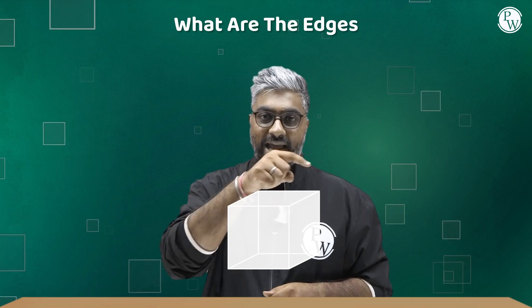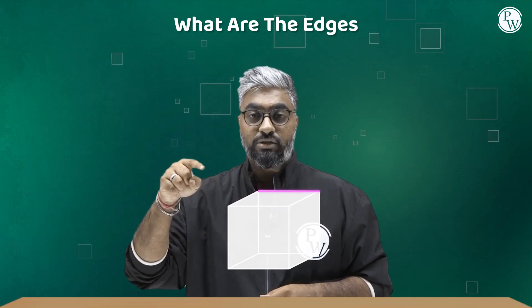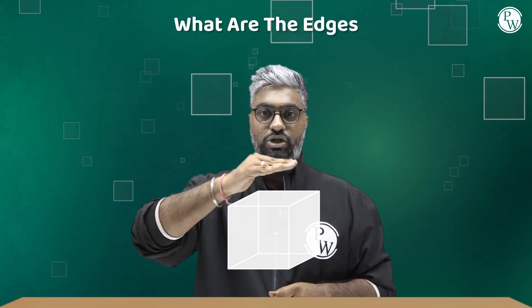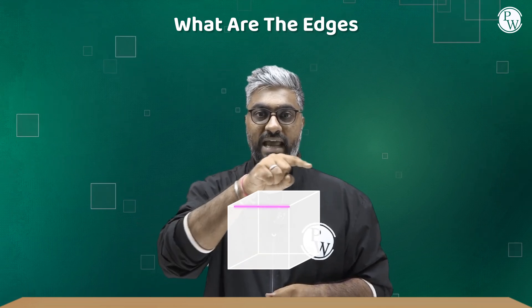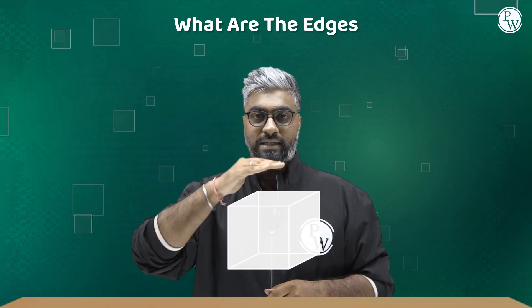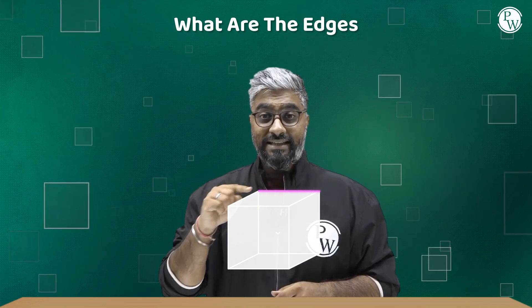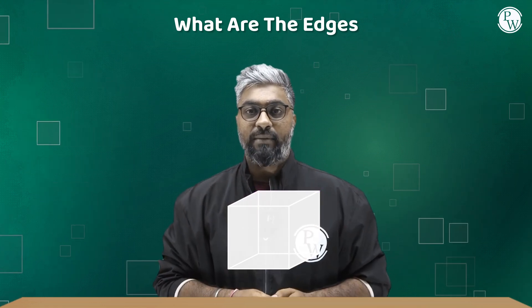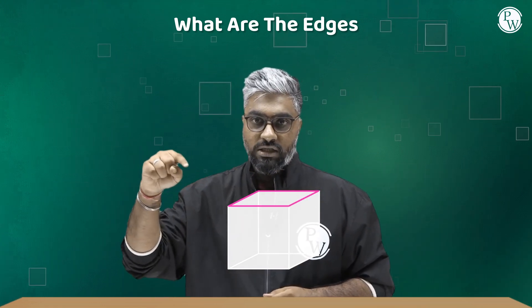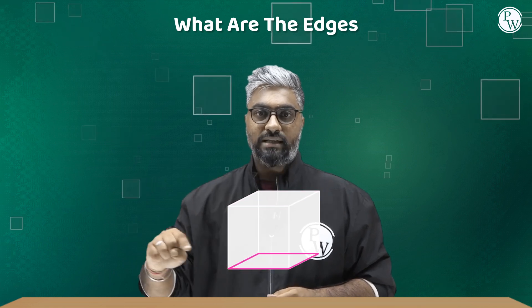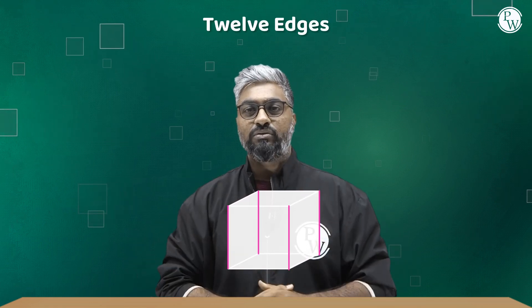Now on these six faces, if you focus properly, you come across 12 edges. Edges are the lines that join two faces. So if you look at the top and the front face, we have an edge here. If you look at the top and the back face, we have an edge here. Like this, we have 12 edges: 4 on the top, 4 at the bottom and 4 on the sides, adding up to 12 edges.